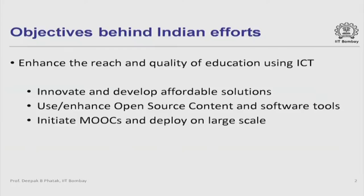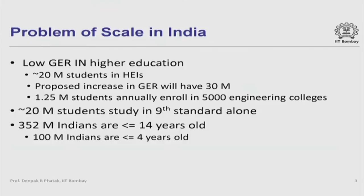First and foremost, we must appreciate the problem of scale in India. We have one of the lowest gross enrollment ratios in the world in higher education. Today we have about 20 million students in higher educational institutions. The proposed increase in gross enrollment ratio will bring that to about 30 million. Of these, 1.25 million students annually enroll in about 3,500 engineering colleges and 1,500 other professional colleges.